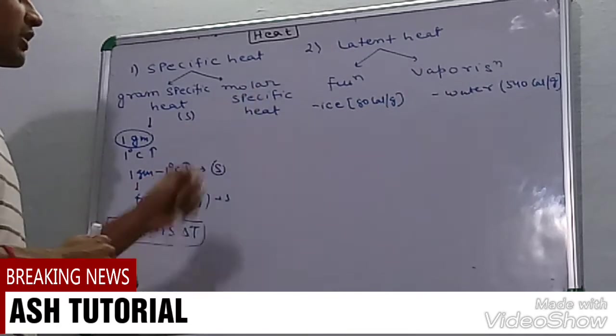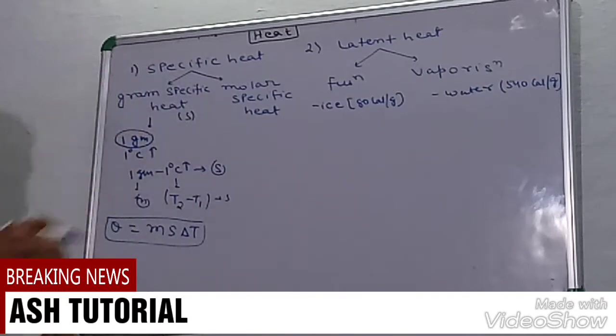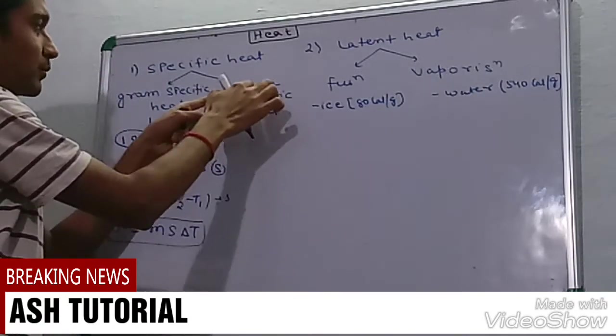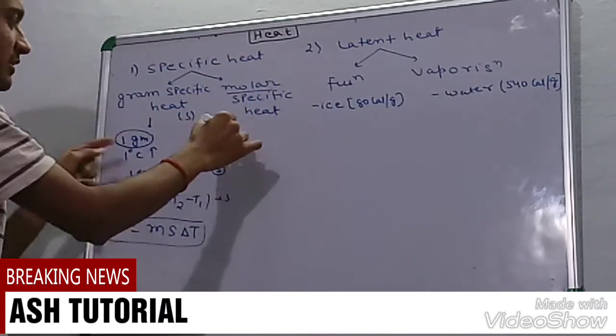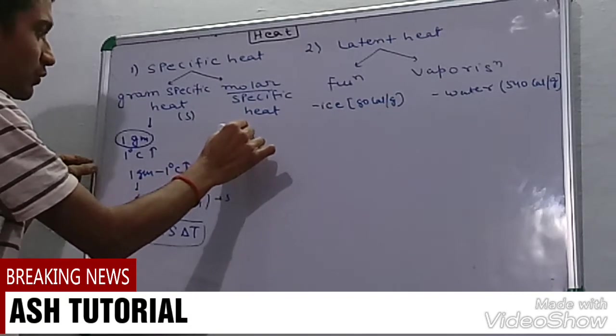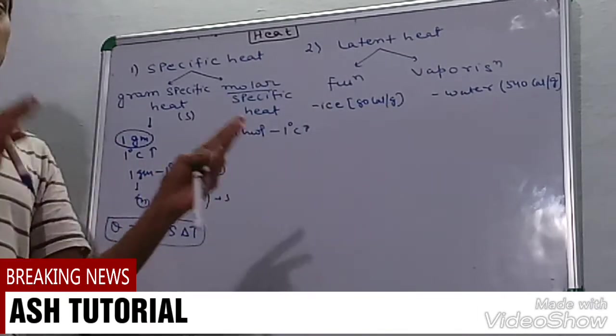Now discussing molar specific heat. Here gram was specific and molar is specific. It means to raise the temperature of one mole of any substance by one degree centigrade, the heat required is molar specific heat, denoted by c.